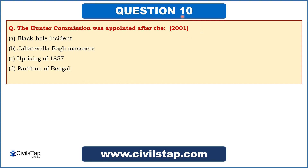This question came in the prelims of 2001: 'The Hunter Commission was appointed after the...' Options are: Black Hole Incident, Jallianwala Bagh Massacre, Uprising of 1857, and Partition of Bengal. We have read about Partition of Bengal and 1857 — there was no Hunter Commission mentioned in relation to those events. So C and D cannot be the answer. We remain with two options: Black Hole Incident or Jallianwala Bagh Massacre. The answer is option B — the Hunter Commission was appointed after the Jallianwala Bagh Massacre.